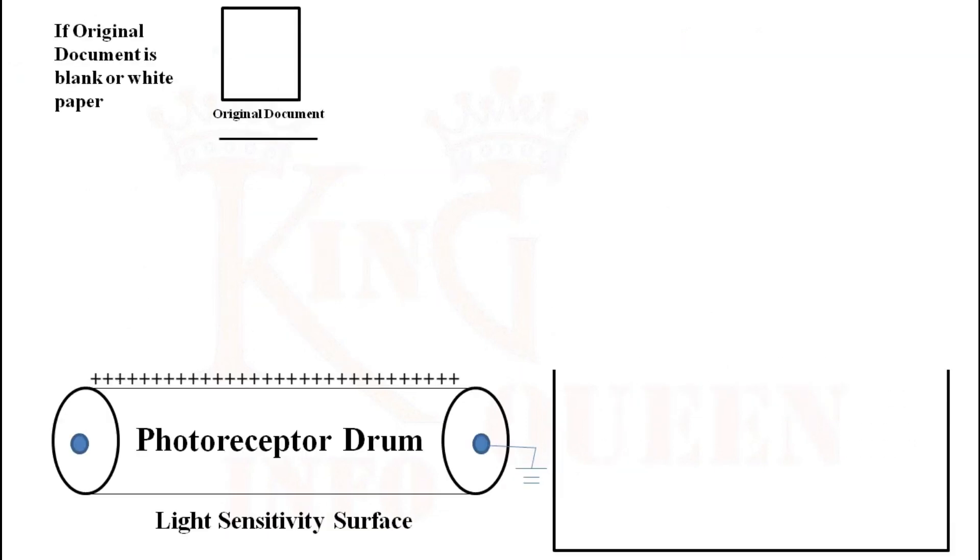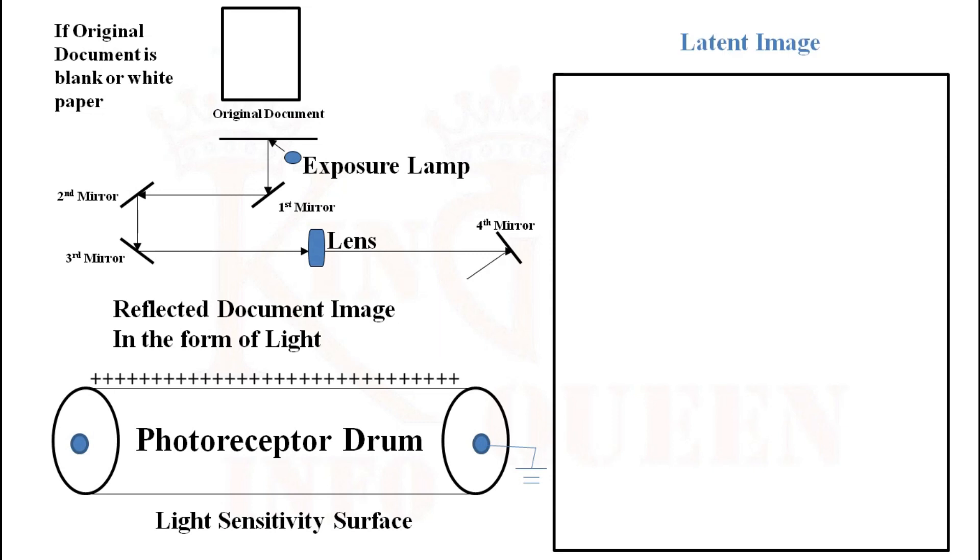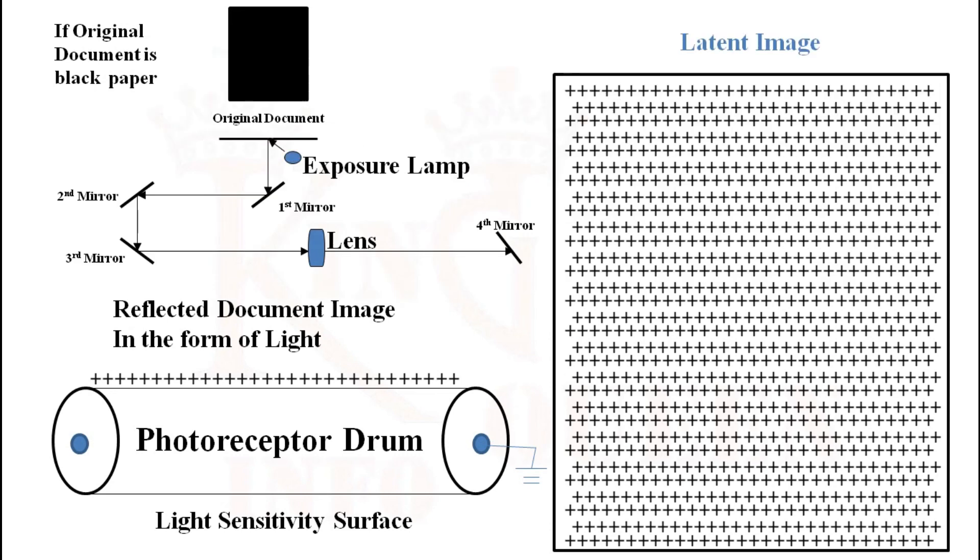If your original document is white or blank paper, where the light falls on the photoreceptor non-image area, the photoreceptor drum is discharged fully. If your original document is full black image area, where light does not fall onto the photoreceptor drum, all charge remains as it is.